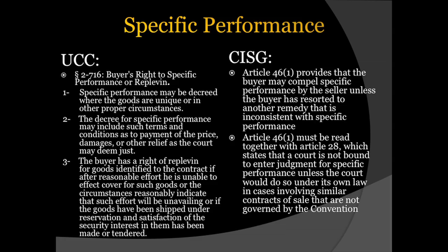In the United States under the UCC, when a buyer contracts for unique goods, the buyer may require specific performance of the contract. When the court orders specific performance, the decree may include payment of the price of the goods, damages, or any other relief the court deems just. Article 46.1 of the CISG allows the buyer to compel specific performance unless the buyer has resorted to another remedy that is inconsistent with specific performance. Read together with Article 28, however, the CISG provides an escape from specific performance when under the laws of a court's own case law involving similar contracts, the court is not bound to enter judgment for specific performance.